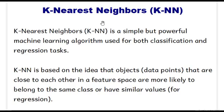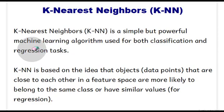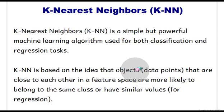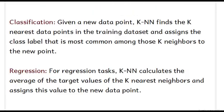KNN is a very simple but powerful machine learning algorithm which can be used for classification as well as regression tasks depending on the problem. KNN is based on the idea that objects or data points that are close to each other in the feature space — if we have some points clustered together — are more likely to belong to the same class or have similar values.